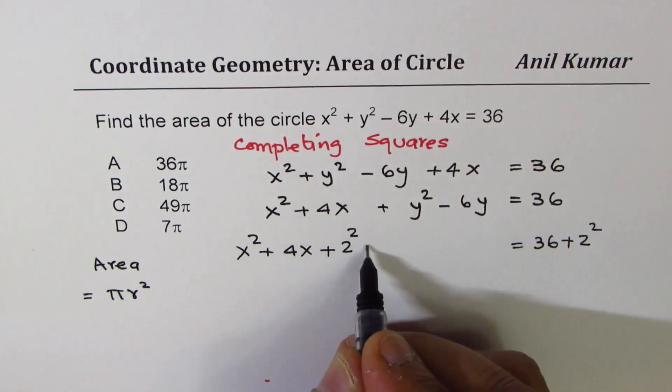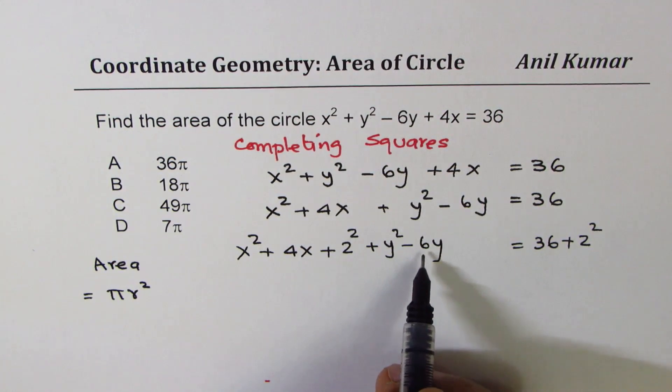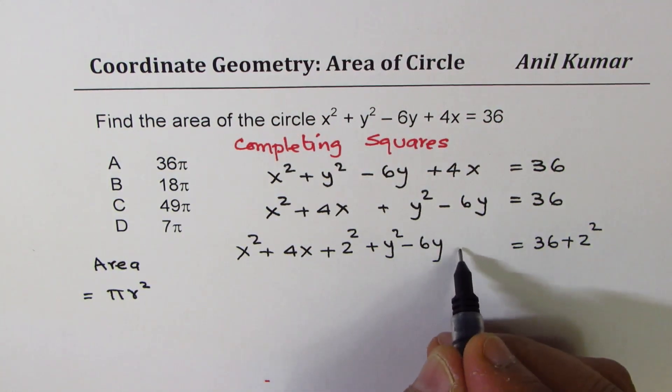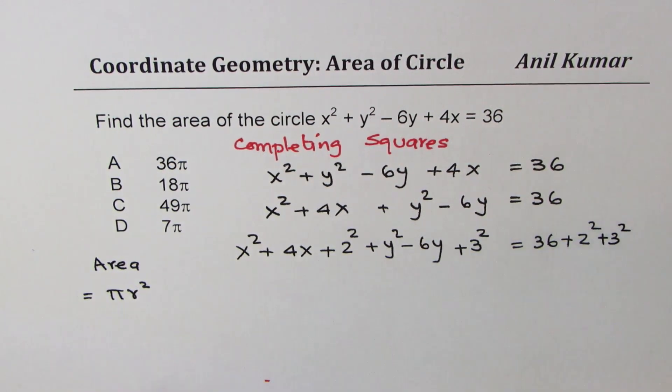For y, y² - 6y, half of 6 is 3. So we have to add 3² on both the sides. Perfect.